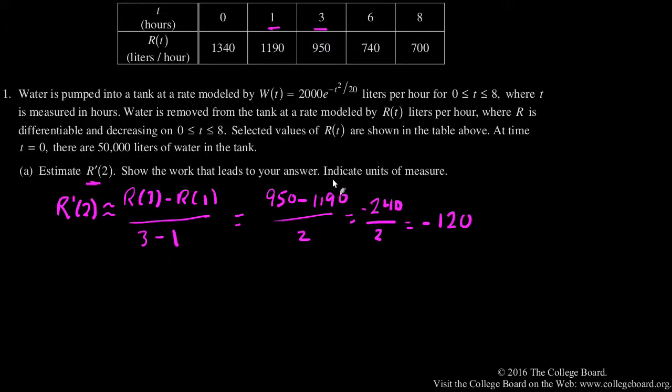And we need to make sure we indicate the units of measure, and the units of measure are liters per hour squared. And the reason we have that, a few ways to look at that: the top is measured in r, and that r has units of liters per hour. And the bottom is t, which is measured in hours, so liters per hour, per hour again, gives us liters per hour squared.